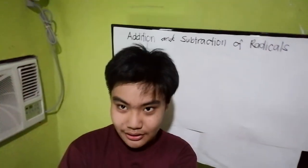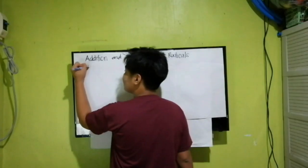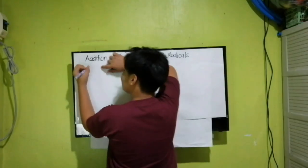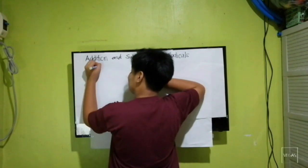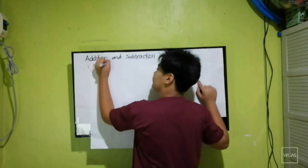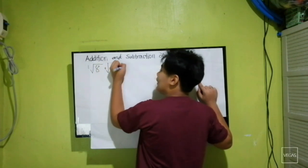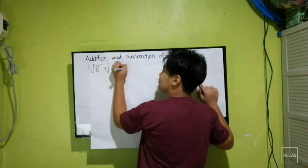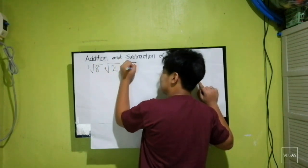I will be doing a Q&A with you guys. The problem given is: square root of a plus square root of 2 plus square root of ab.